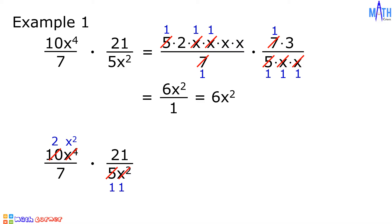In 21 and 7, 7 is a common factor. 21 divided by 7 is equal to 3, and 7 divided by 7 is equal to 1. Let us multiply the remaining factors: 2 times x squared times 3 is equal to 6x squared, over 1 times 1 times 1 is equal to 1. 6x squared over 1 equals 6x squared.